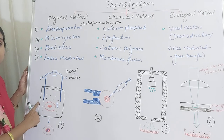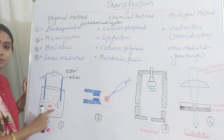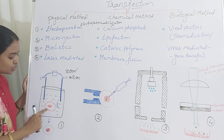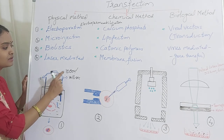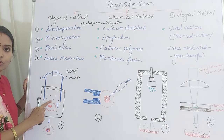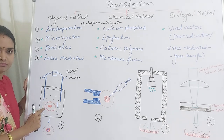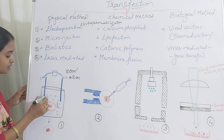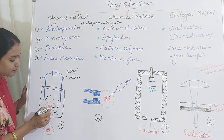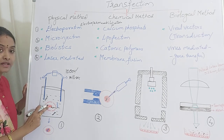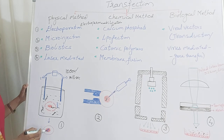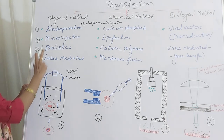Pores are formed in the plasma membrane of the target cell. You have a suitable buffer in which positive and negative electrodes generate this impulse. When there is 1000 volts supply for milliseconds, the plasma membrane pores are created. The DNA is freely suspended in the buffer. As the pores are formed, this DNA escapes inside, enters the cell, and then gets integrated into the nucleus.